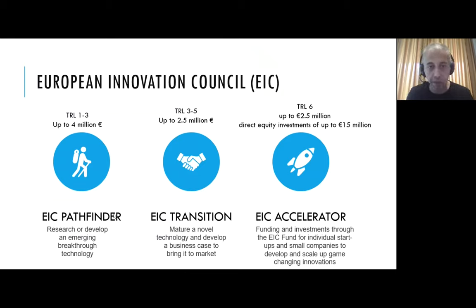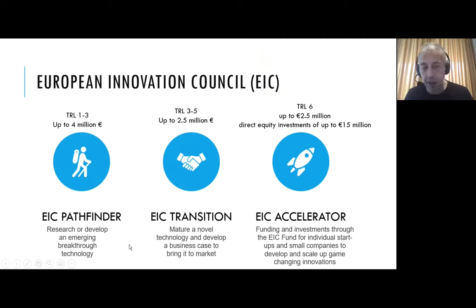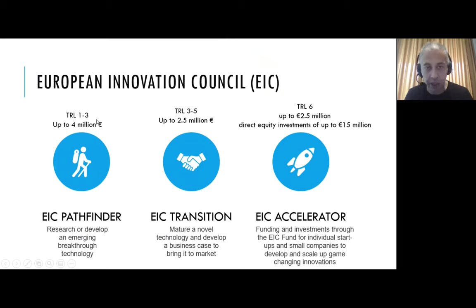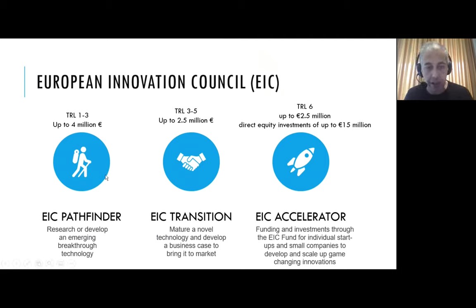The second grant is EIC Transition — the second step after EIC Pathfinder. You develop a project in EIC Pathfinder, then carry it to EIC Transition, which covers TRL three to five. In EIC Transition, you are developing your project as a real business case and they are supporting it. However, there is a condition: you must finish EIC Pathfinder before you can apply to EIC Transition. There is a direct relation between them.